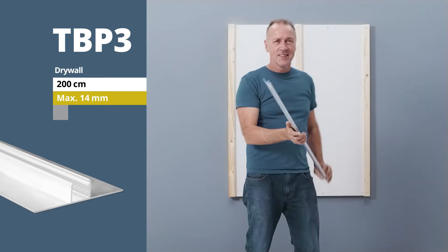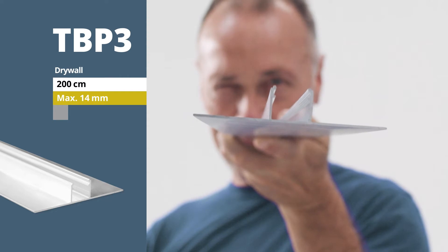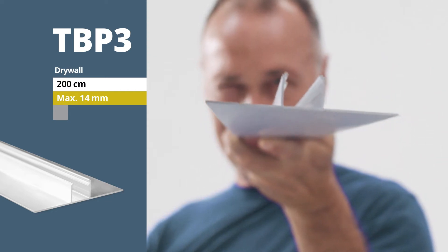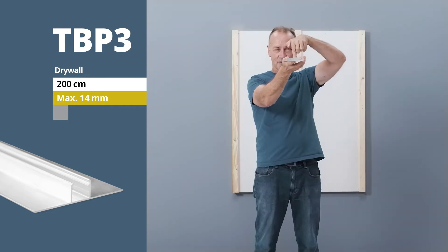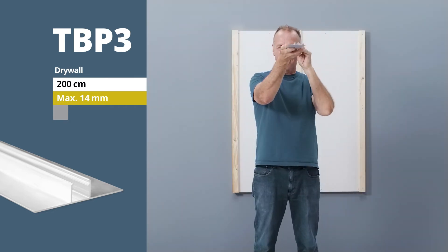The profile made of anodized aluminium is supplied in our standard length of 200 centimeters. It's a full-fledged light module and can be equipped with LED flagstrips with a maximum width of 14 millimeters.